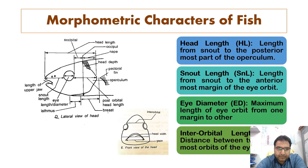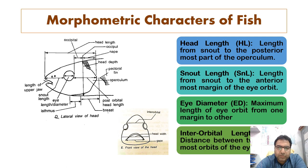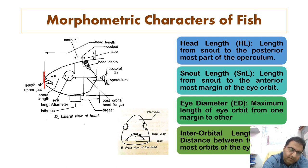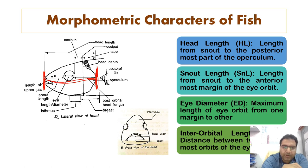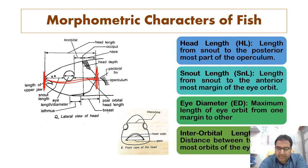Head length, denoted by HL, is the measurement from the snout to the posterior part of the operculum. So it is rightly from the tip of the snout up to the posterior edge of the operculum — that is the head length.